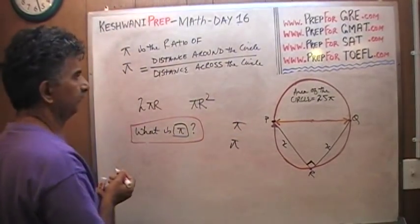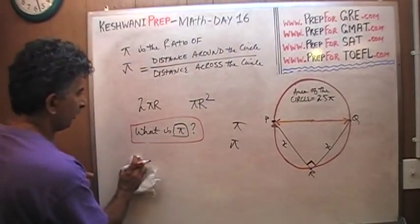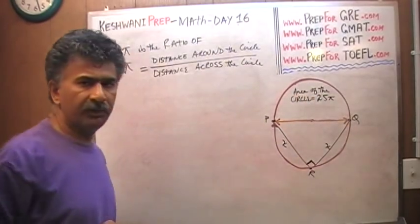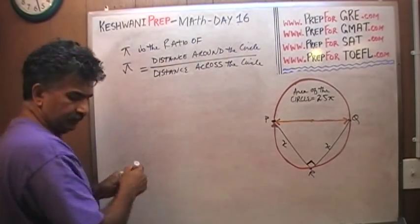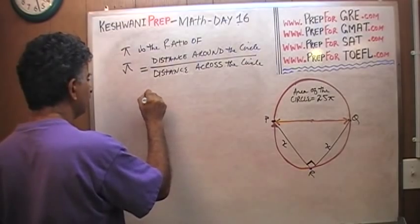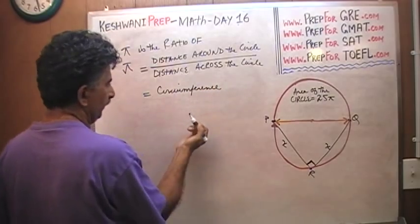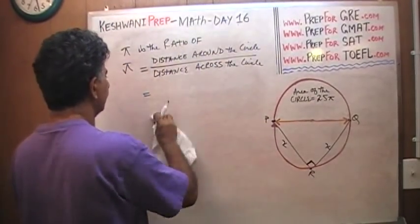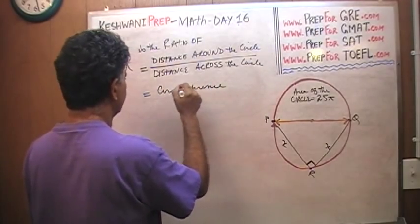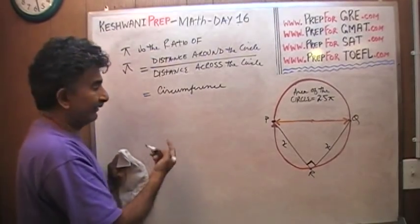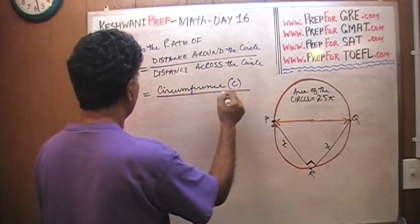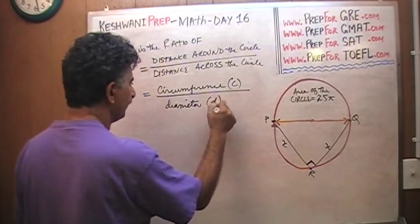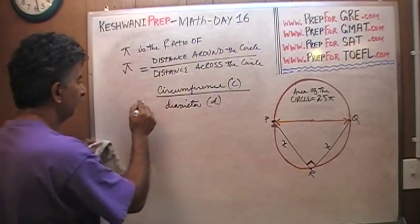What do we call the distance around the circle? In mathematics we call it the circumference — the distance around the circle is called circumference — and the usual letter we use to designate this quantity is C. And what do we call the distance across the circle? We call it the diameter, represented usually with the letter D. That ratio is called pi.